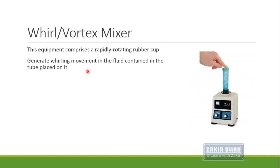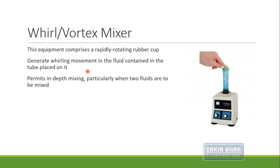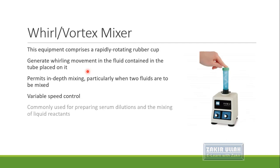The vortex mixer contains a rapidly rotating rubber cap or head. When a tube containing fluid is placed on this head, the vortex mixer produces a whirling motion and mixes the solution. This type of mixer allows very thorough and in-depth mixing, especially when two fluids are mixed with each other. The mixer has an adjustable speed range and is commonly used for preparing serum dilutions or dilutions of different solutions reacting with each other.